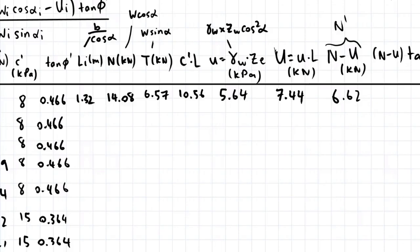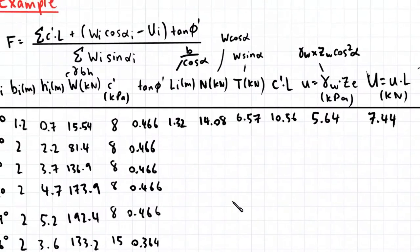And finally, we multiply this term here, the effective normal force by tan phi. And it gives us a value of 3.08. And this term here corresponds to this term here in the factor of safety. So this bracket here is actually N dash.